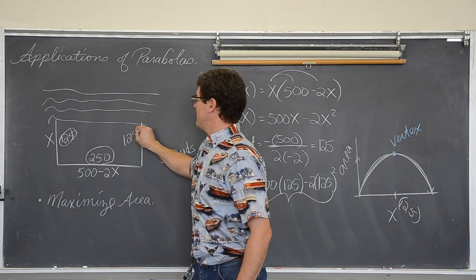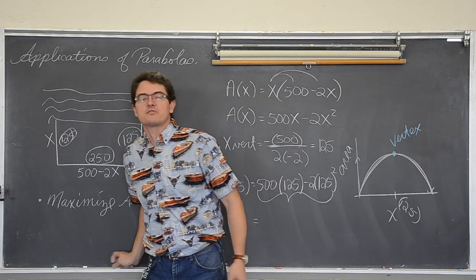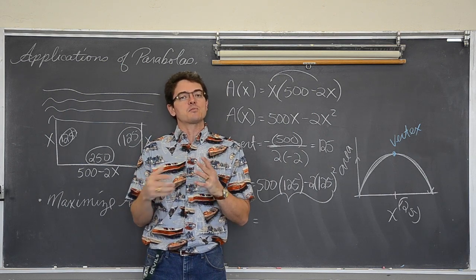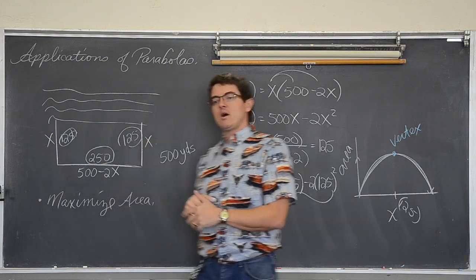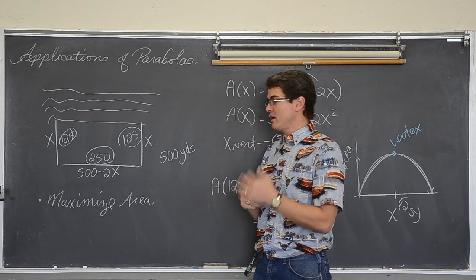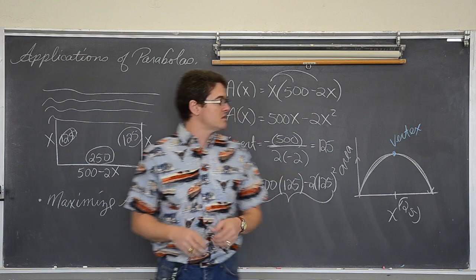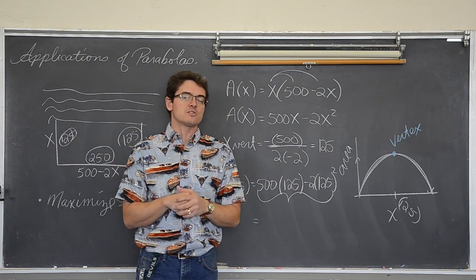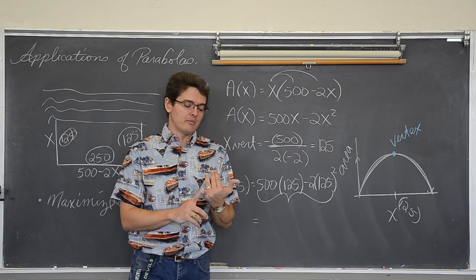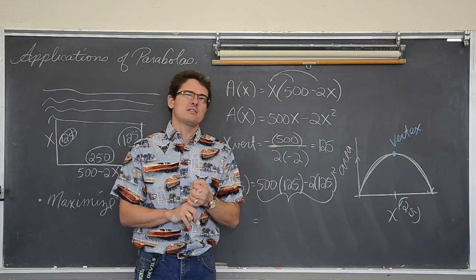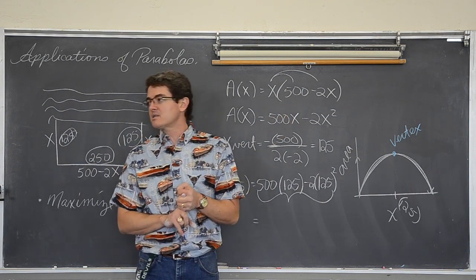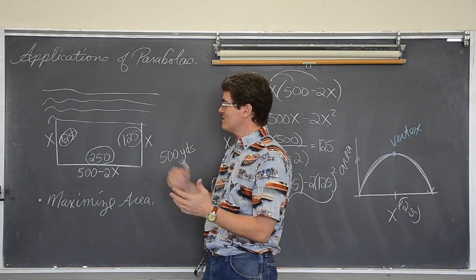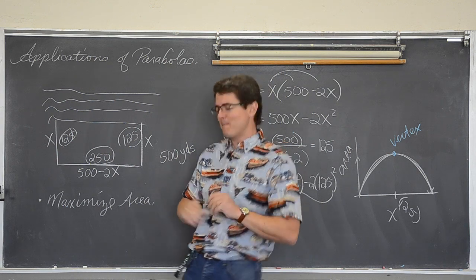We would get the maximum area that we could possibly enclose with this fence against the river. We took a length and a width related to a fixed perimeter of 500, did the distributive property, got a parabola opening down, worked out -b over 2a, and found that x = 125 maximizes the area. If you go back and watch the modeling with functions videos, a lot of those real-life applications ended in a parabola, and you can use -b over 2a to find the vertex, hence maximizing revenue, maximizing area, and finding maximum values of real-life applications using parabolas and vertices. BAM! Have a great day!